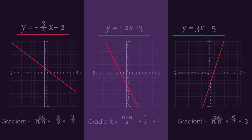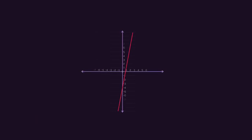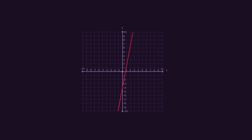So here, the y-intercept is two and negative three and negative five. This is no coincidence. Straight lines are written in the format y equals mx plus c, where m is the gradient and c is the y-intercept.